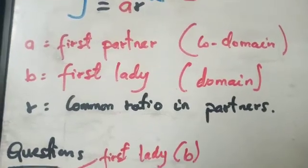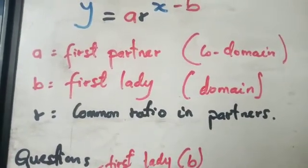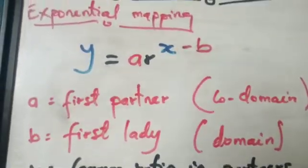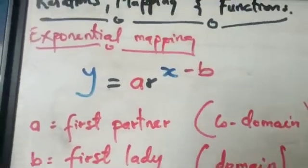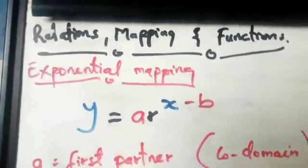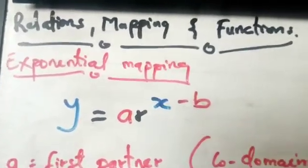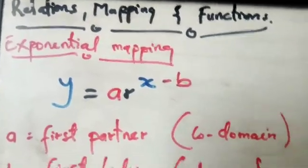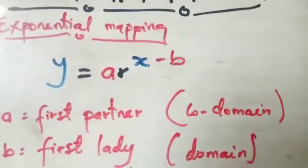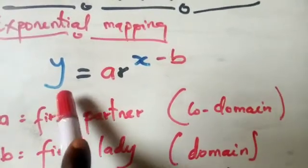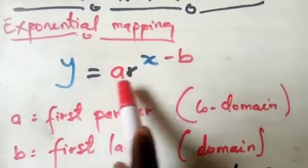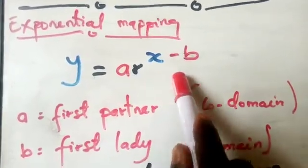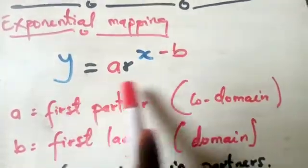In this video we discuss exponential mapping under the relations, mapping, and functions topic. Let's look at exactly what an exponential mapping is. The equation looks like y is equal to a times r to the exponent X minus B.